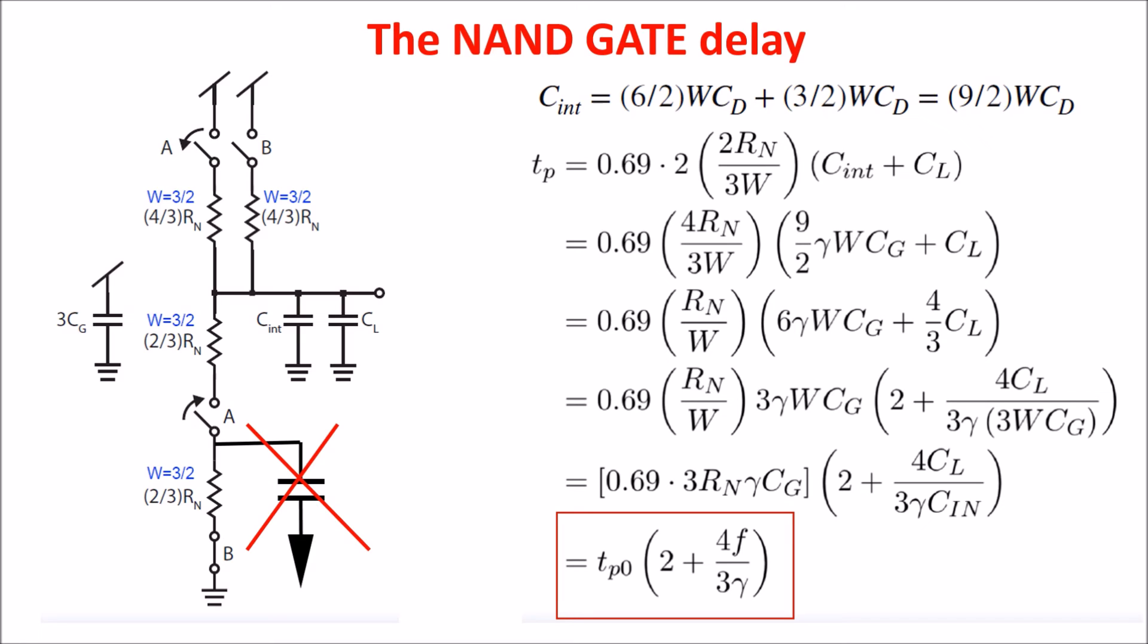Carrying out the calculation, we get the delay is equal τp0 times 2, plus 4/3rd fanout divided by γ. So, the NAND delay is the double of the inverter delay for fanout equals 0. So, the NAND intrinsic delay is the double of the inverter intrinsic delay.